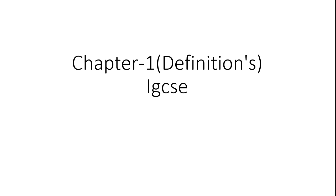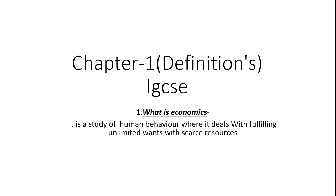We are going to start the first chapter of AGCS Economics. The first definition we must learn is: what is economics? Economics is the study of human behavior where we deal with how to fulfill unlimited wants with scarce resources.